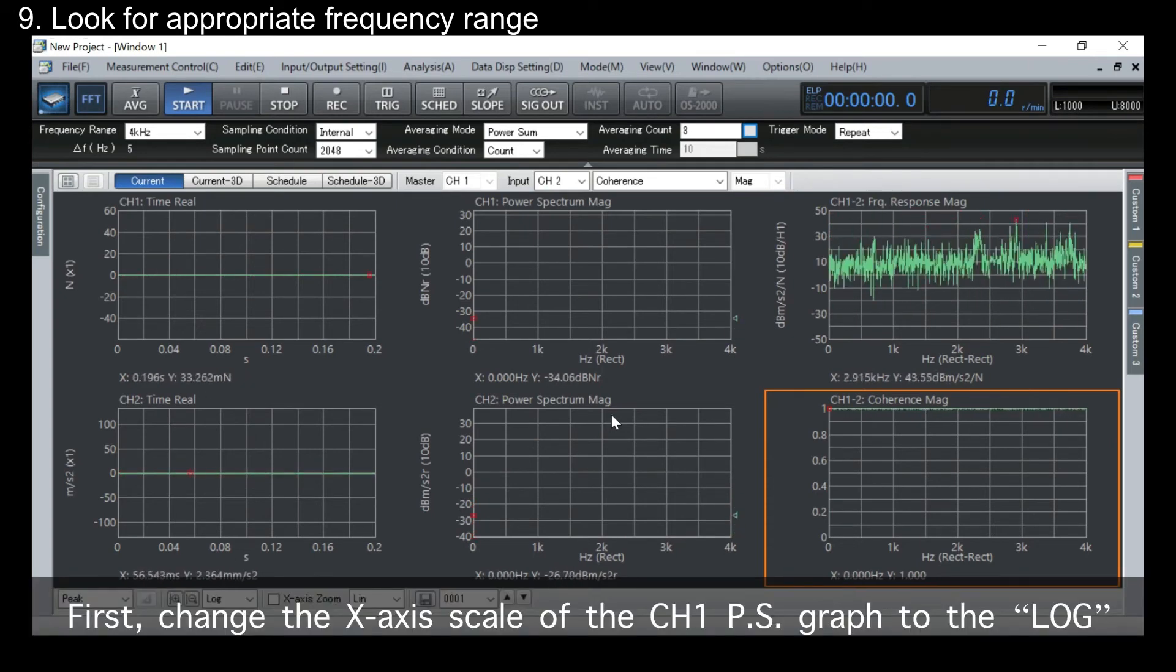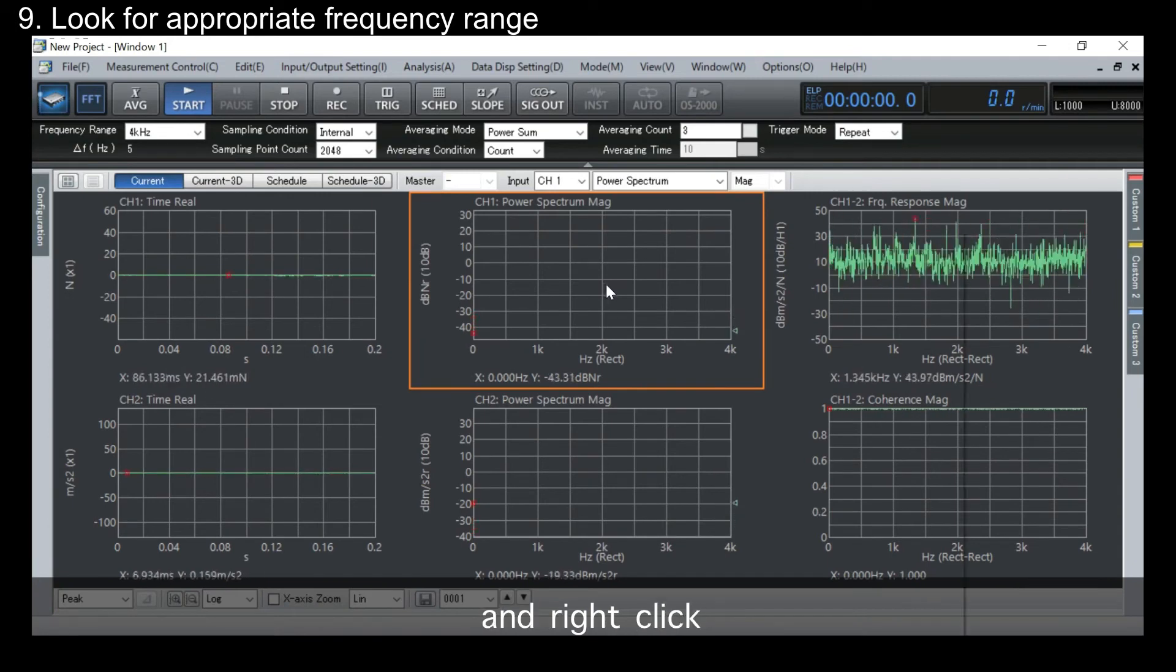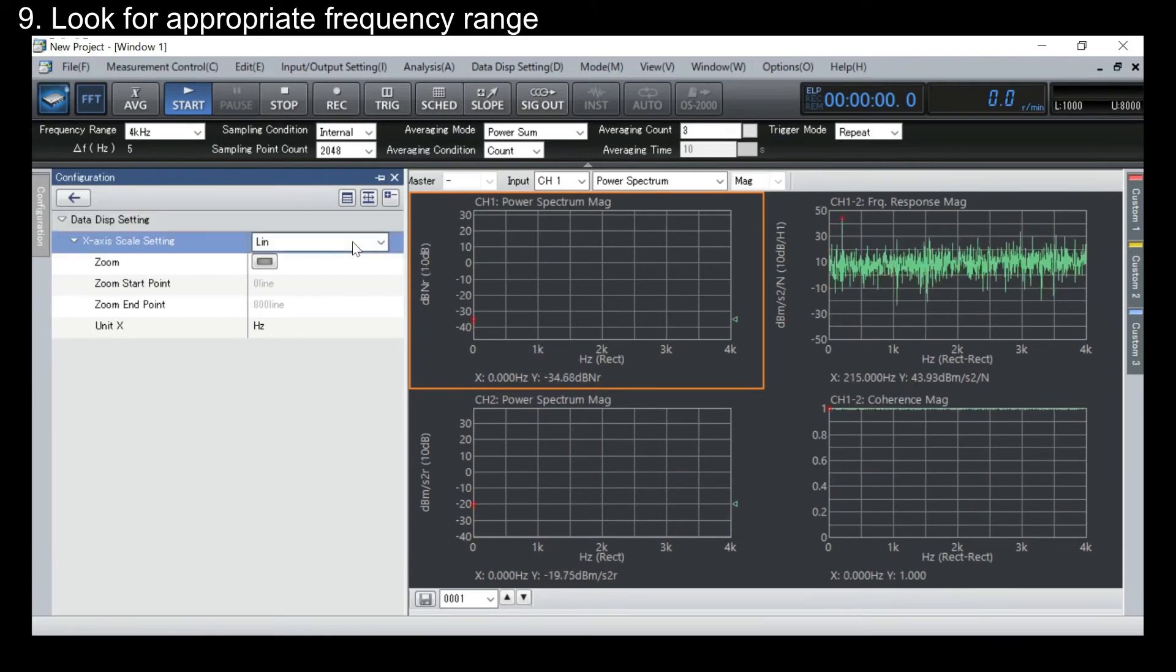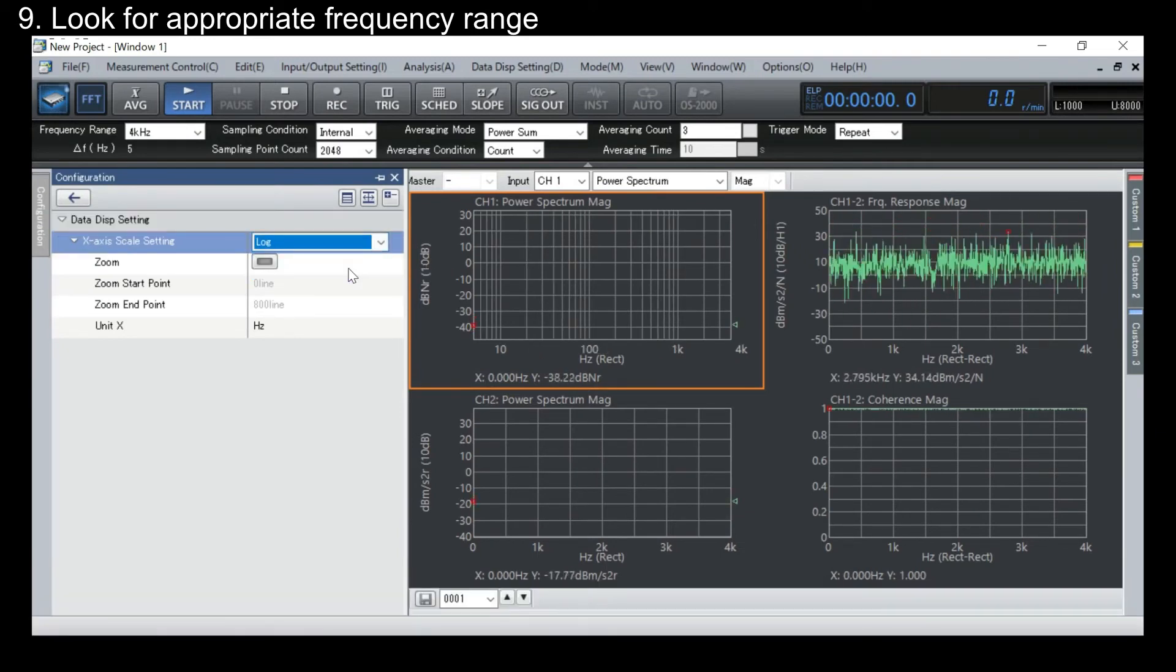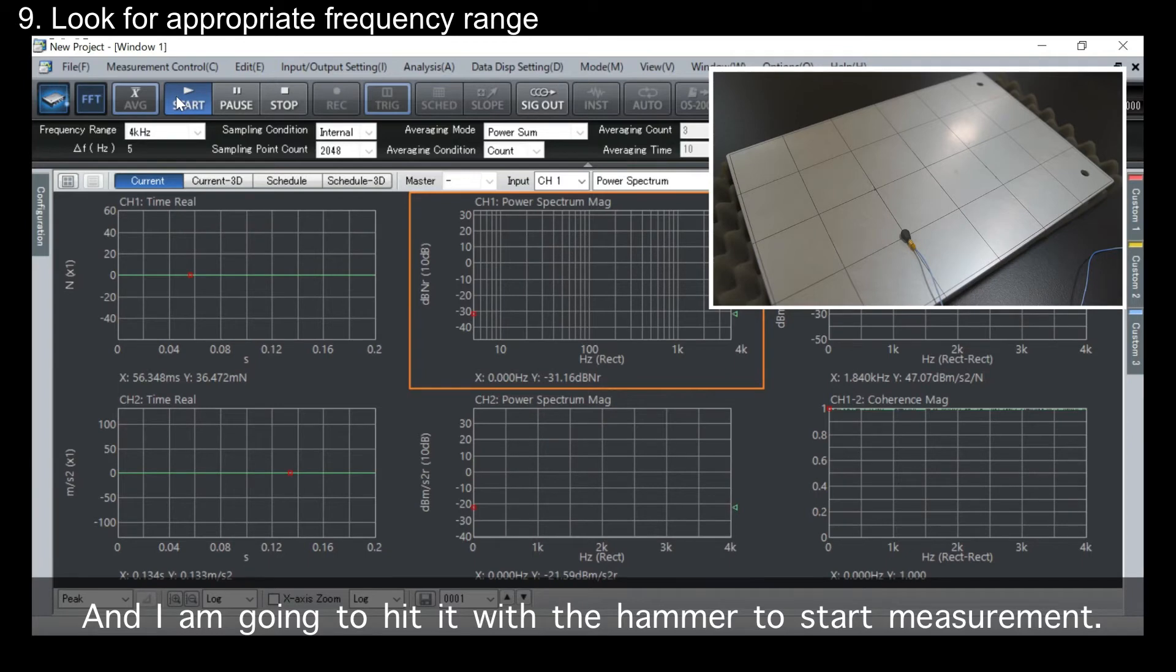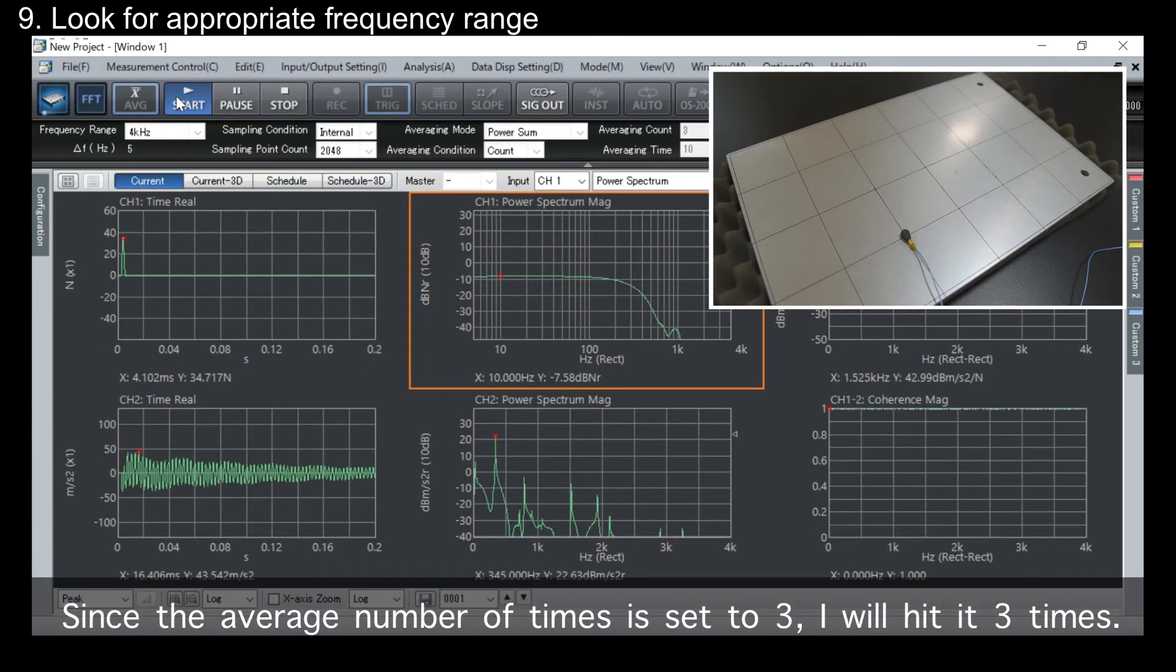First, change X-axis scale of the channel 1 power spectrum graph to the log. Click graph and right-click X-axis scale setting and switch it to log scale. Then, click trigger button, average button, and start button. And I'm gonna hit it with a hammer to start measurement. Since the average number of times is set to 3, I will hit 3 times.